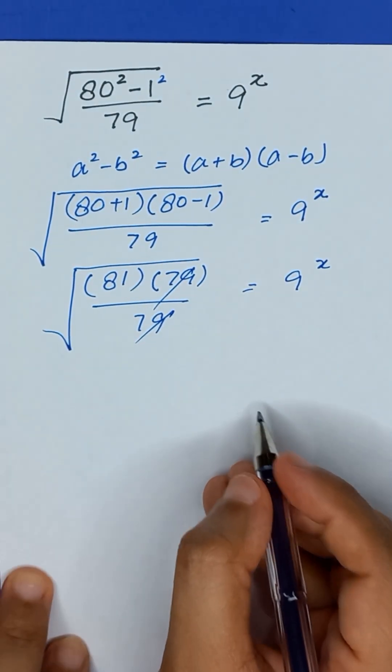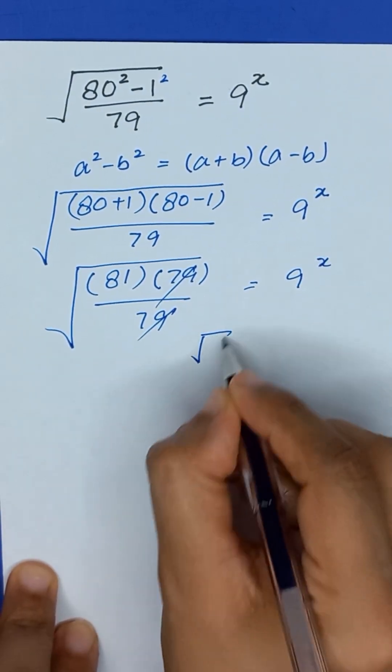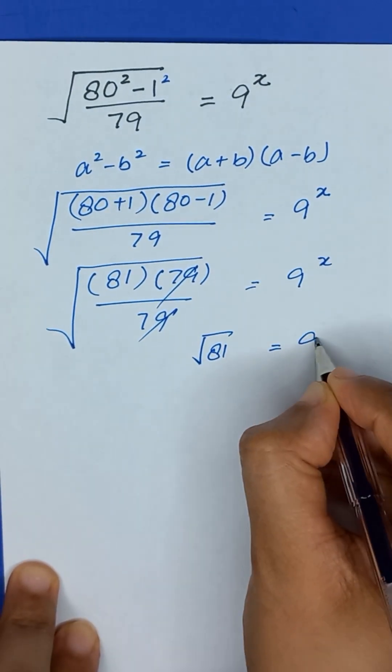This 79 and 79 will be cancelled out, and we have remaining square root of 81 is equal to 9 to the power x.